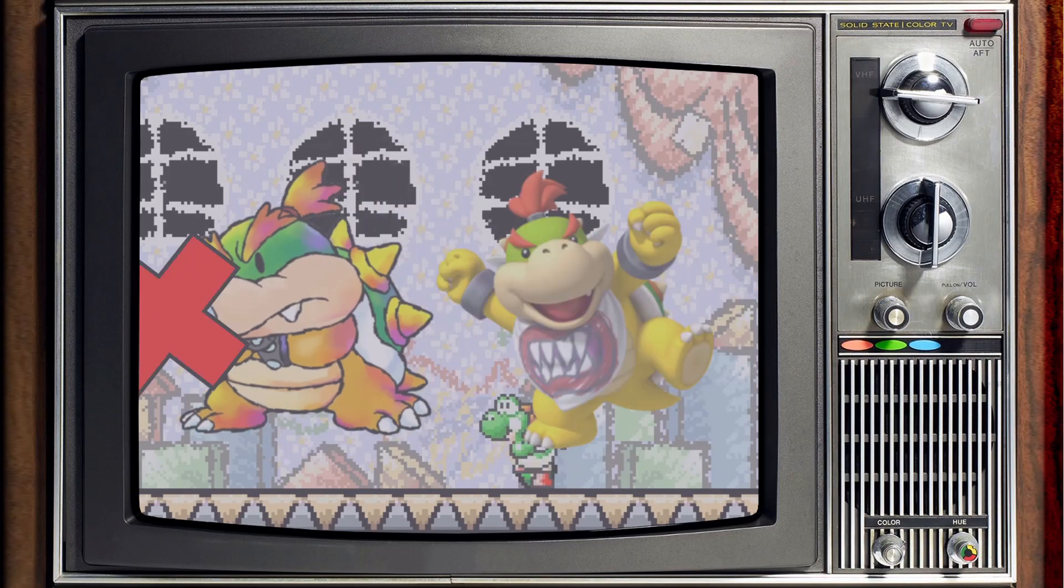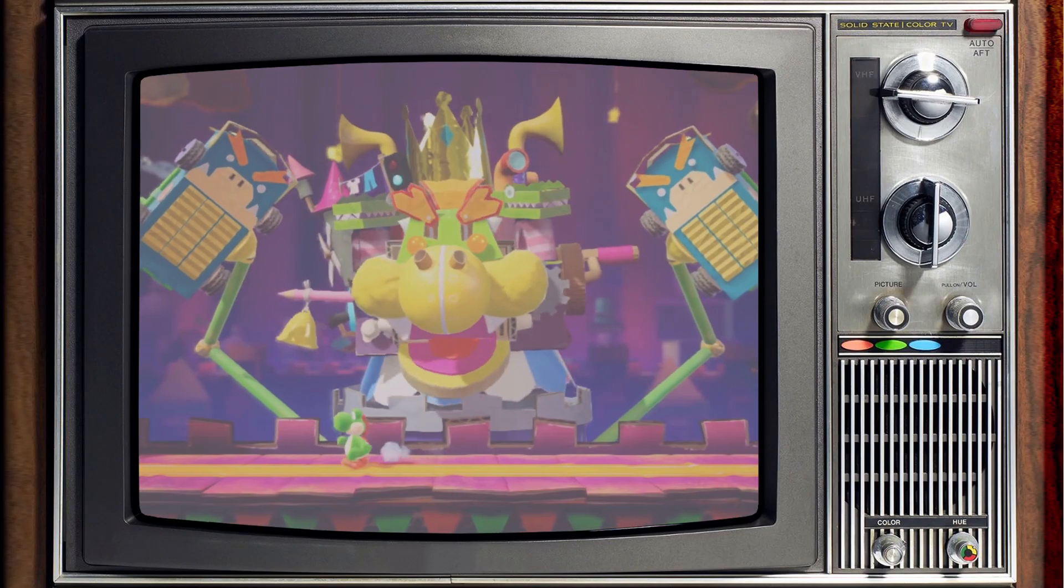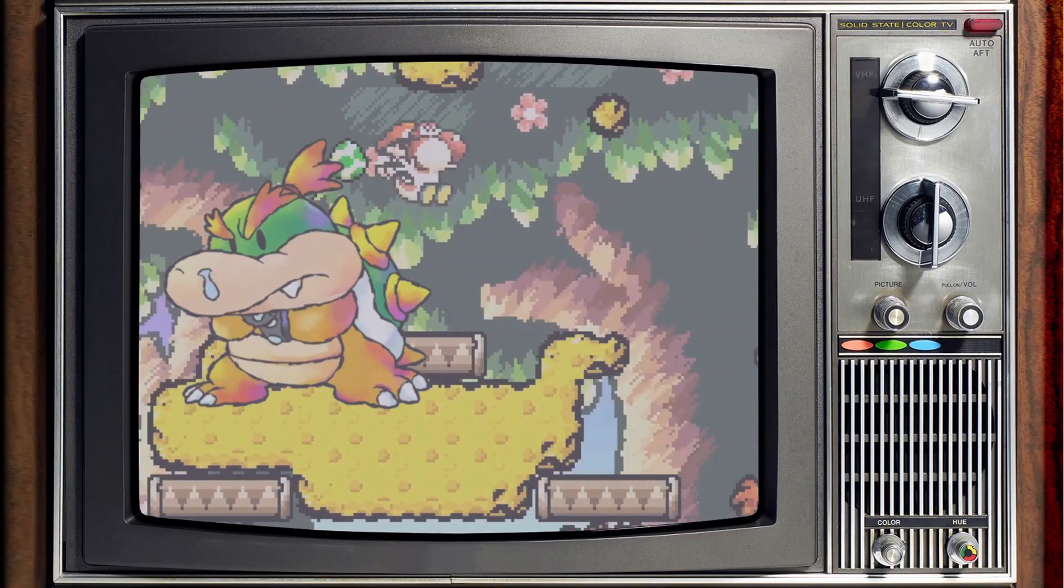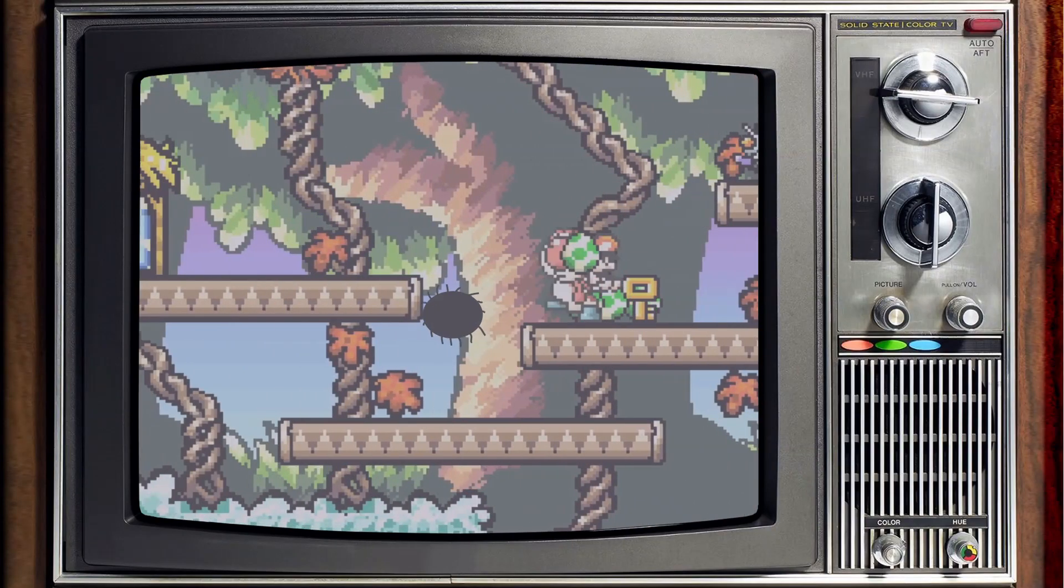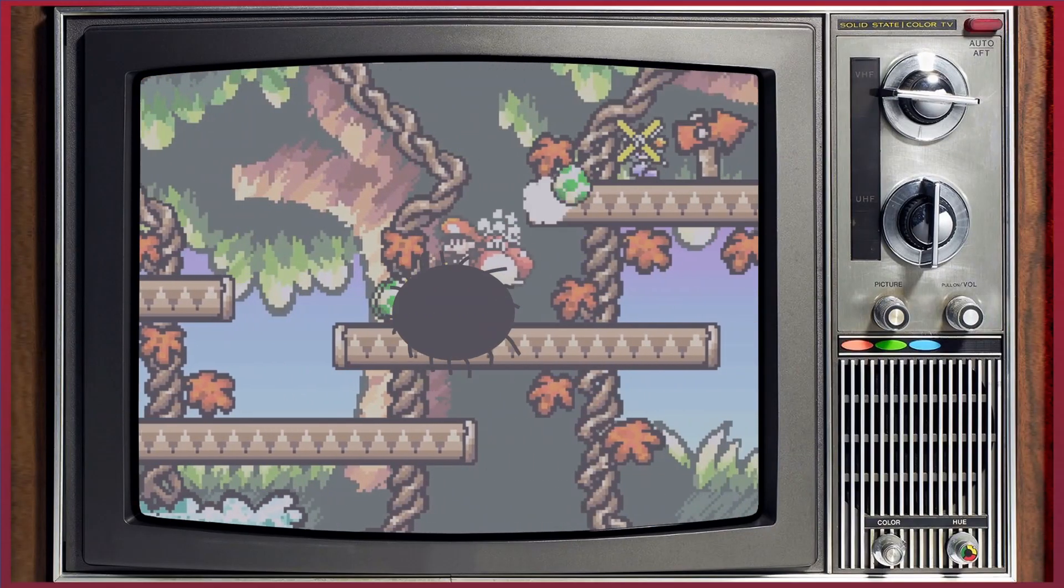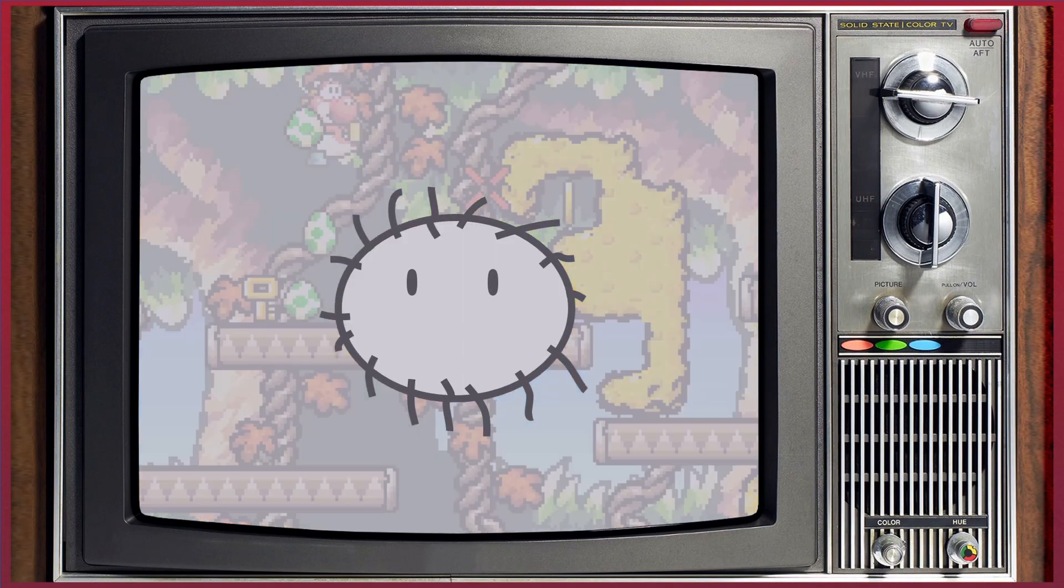Baby Bowser is definitely not Bowser Jr., and sometimes grows giant, or creates giant mechs, in order to fight Yoshi. But out of all of the dangerous and not-so-dangerous foes present in Yoshi's rogues gallery, the worst of them all is the frustrating, the infuriating, the incredibly disorienting... Fuzzies.